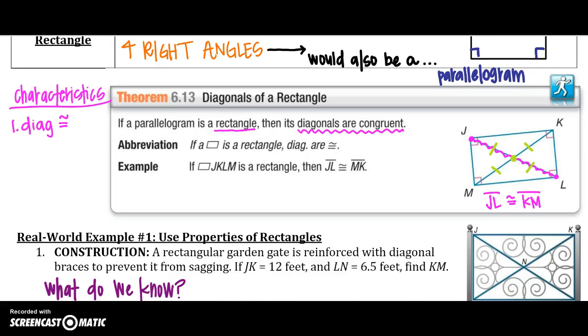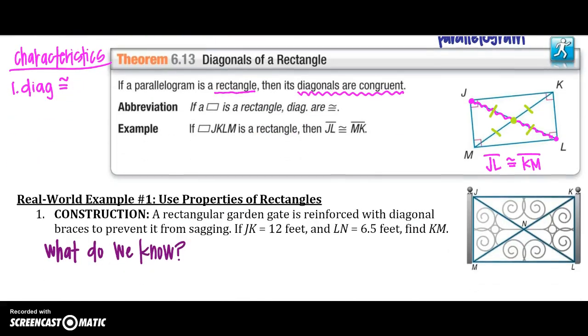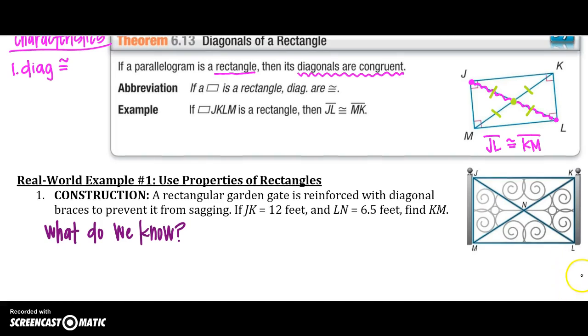So looking at our first problem, we have a rectangular garden gate that is reinforced with our diagonals to prevent sagging. So we know that we're told that JK is 12 feet, LN, so this segment right here, is 6.5 feet, and we are asked to find KM.